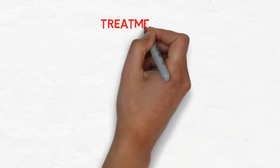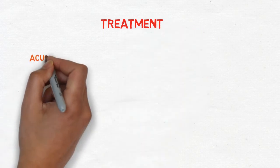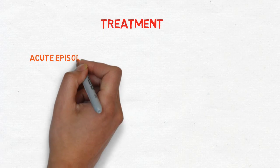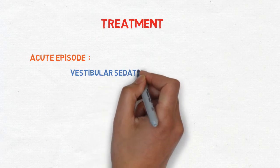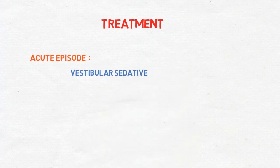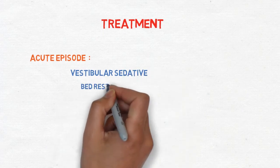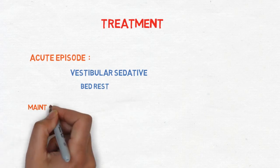Let's talk about treatment. The treatment of this disease is divided into two parts. First one is acute episode, another one is maintenance phase. In acute episode we can give labyrinthine sedatives to the patient like cinnarizine, prochlorperazine and say take some bed rest.